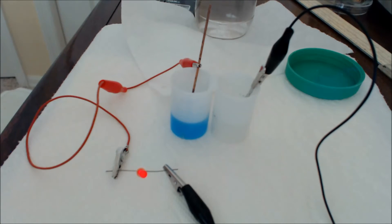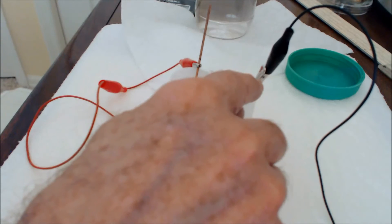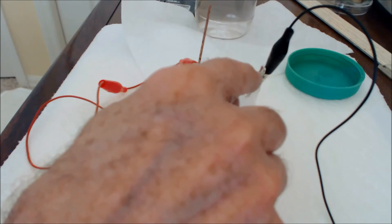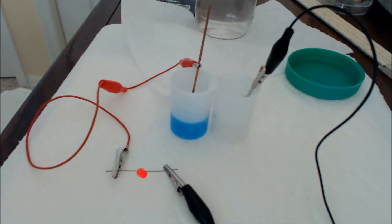So oxidation takes place at the cathode. And so this is the cathode. The zinc is getting oxidized. And reduction is taking place at the anode. The copper is being reduced.